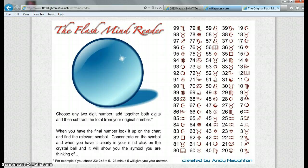When you have got your final number, look it up on the chart. So I'm going to find 18, and I've got that symbol. Concentrate on the symbol, and when you've got it clearly in your mind, imagine it in the crystal ball. Have you got it?